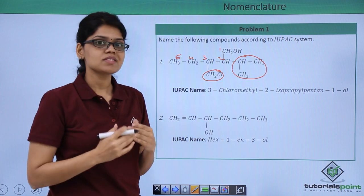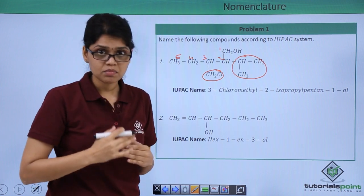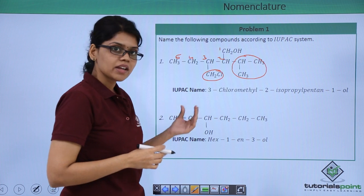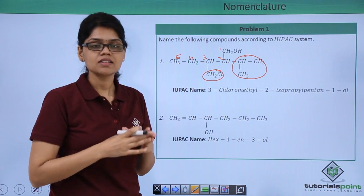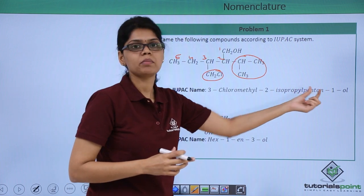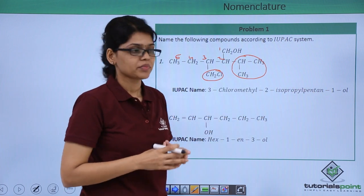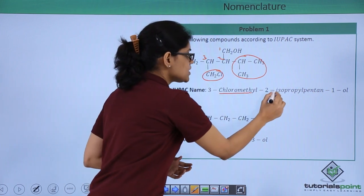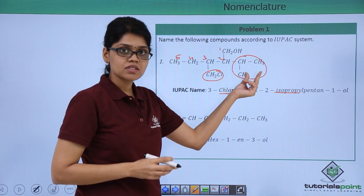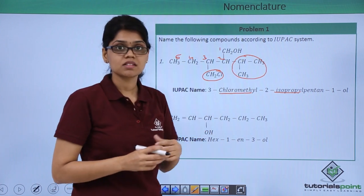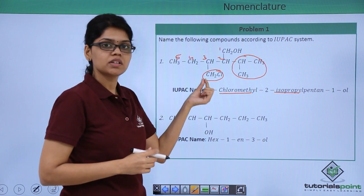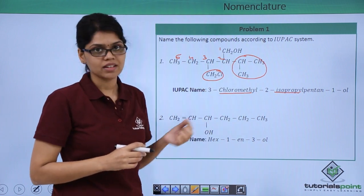The substituents are written based on alphabetical precedence. Therefore, the IUPAC name of the structure is 3-chloromethyl-2-isopropyl-pentan-1-ol, because chloromethyl precedes isopropyl alphabetically. CH3-CH-CH3 is the isopropyl group and CH2Cl is the chloromethyl group.